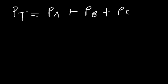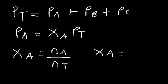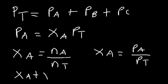You can also calculate the partial pressure of a gas if you know the mole fraction. The partial pressure of substance A equals the mole fraction of that substance times the total pressure. You can calculate the mole fraction by taking the moles of substance A divided by the total moles in the container. Another way to find the mole fraction is the partial pressure of that substance divided by the total pressure. The sum of all mole fractions must add up to one.